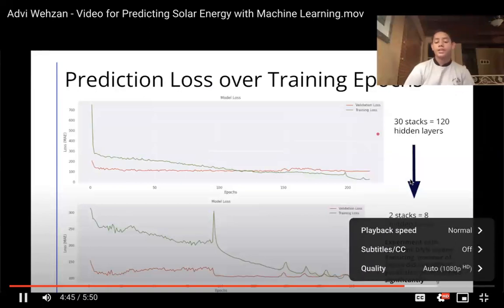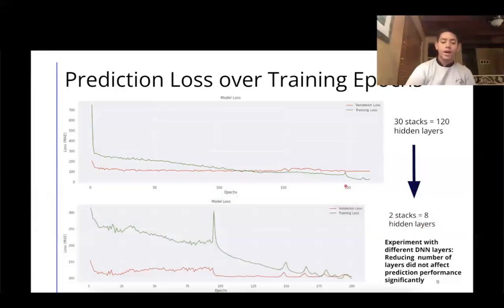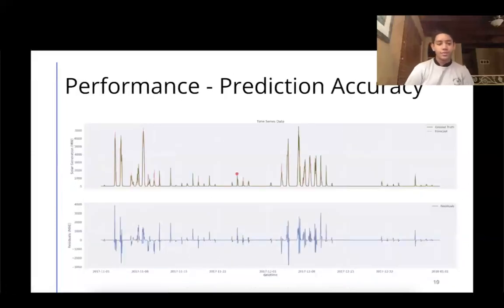Right here, we can see 120 hidden layers versus 8 hidden layers. This is basically, as I mentioned before, how many times it's iterating through this data. So in terms of epochs, at 100 epochs, they ended up having roughly the same performance. Note that the scale here is 700, the scale here is 300. Since they had roughly the same performance, there's no point in computing even more. This was simply a waste of time and computing resources.